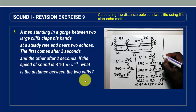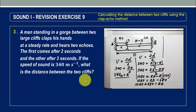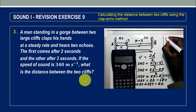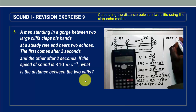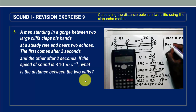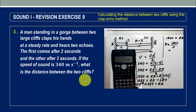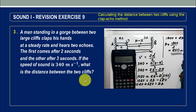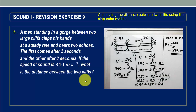So 1020 plus 680 equals 2D, giving us 2D equals 1700. Therefore D equals 1700 divided by 2, which gives us 850 meters as the distance from one cliff to the other.